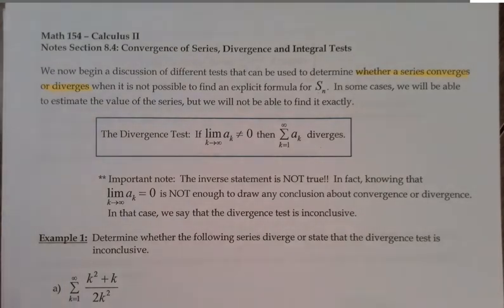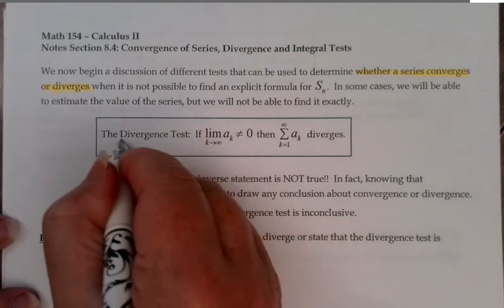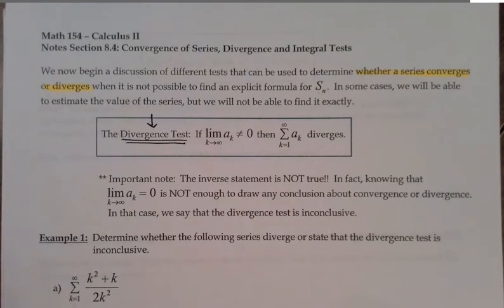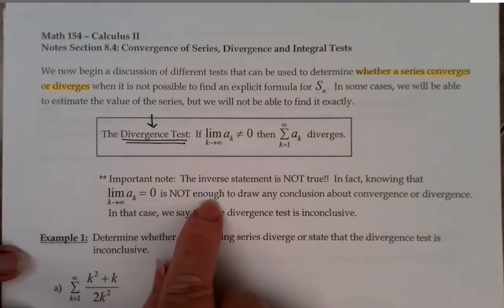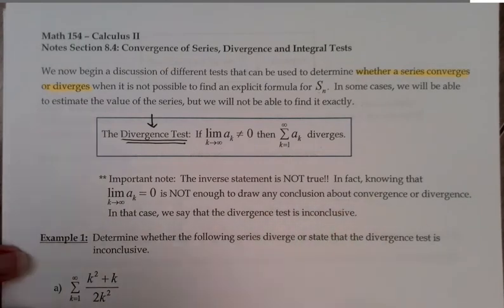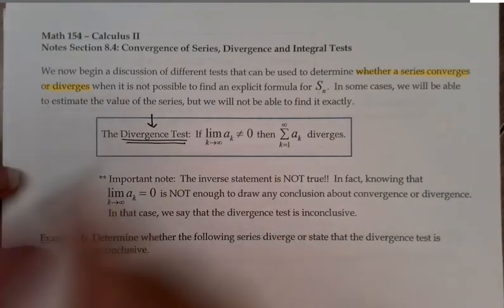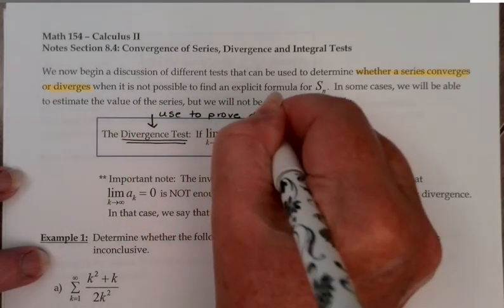One important note: the inverse of this theorem is not true. In other words, if the a sub k's do go to 0, that does not mean the series converges. This test can only be used to prove divergence. It cannot be used to prove convergence. So if the limit of the a sub k's is 0, that is not enough to draw any conclusions about convergence or divergence, and we just have to say that our test is inconclusive.